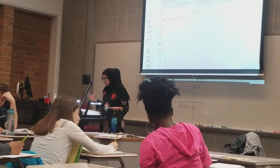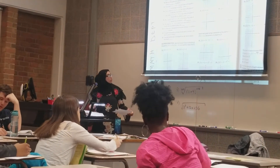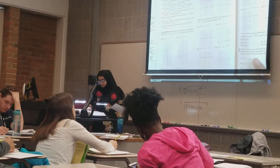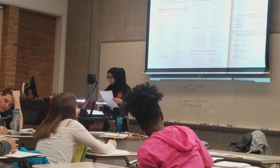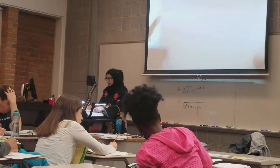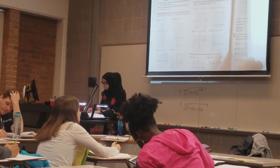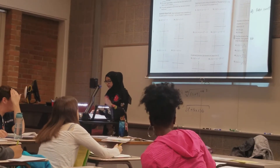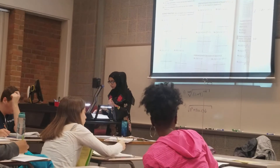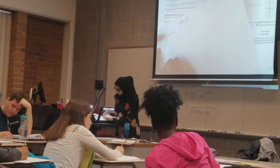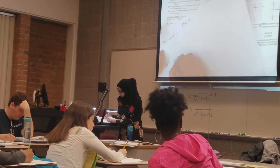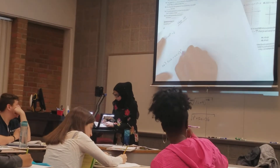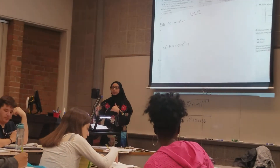Next question — something else that looks challenging. Number 36. Just like we did on the one before, take a little piece of paper, write number 36, write that question right down. So that's f of x is equal to negative x minus 2 squared, minus 3.